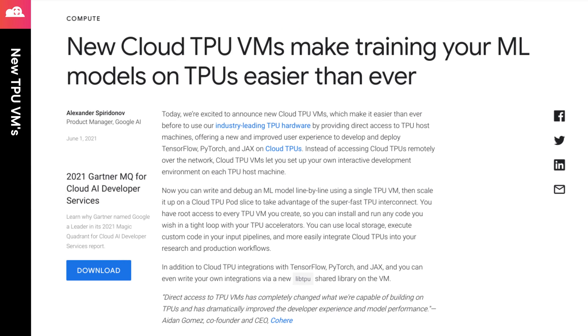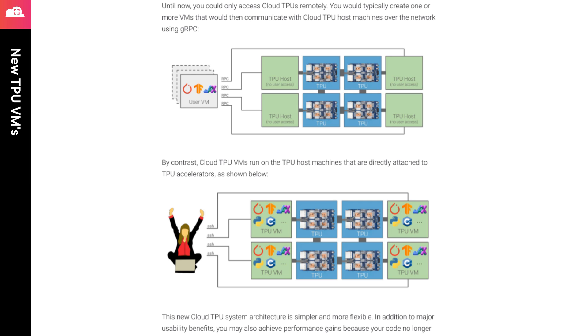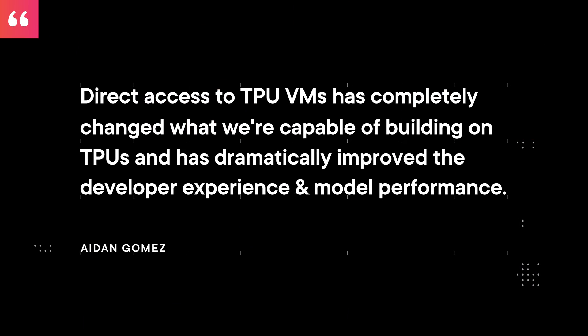If you're training large and complex models on Google Cloud, you'll be excited to hear that Google has just announced new Cloud TPU VMs which provide direct access to TPU host machines instead of accessing the TPUs over the network. You can use this to do all of your model creation on a single VM that can access the TPU directly and later expand out for large-scale training. Aidan Gomez, the CEO of Cohere, states that direct access to TPU VMs has completely changed what we're capable of building on TPUs and has dramatically improved the developer experience and model performance.